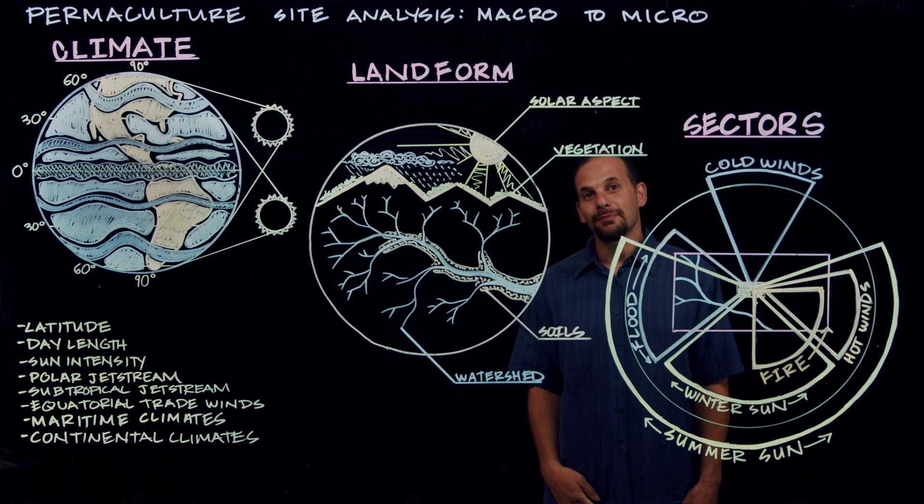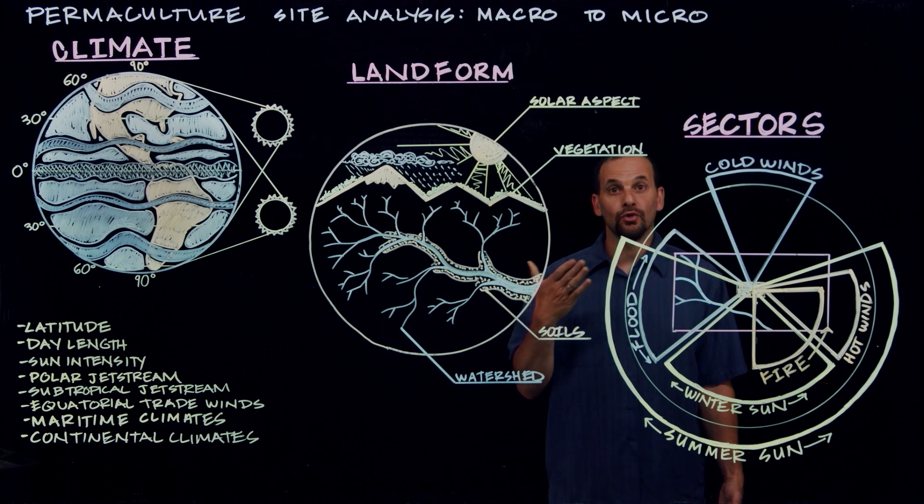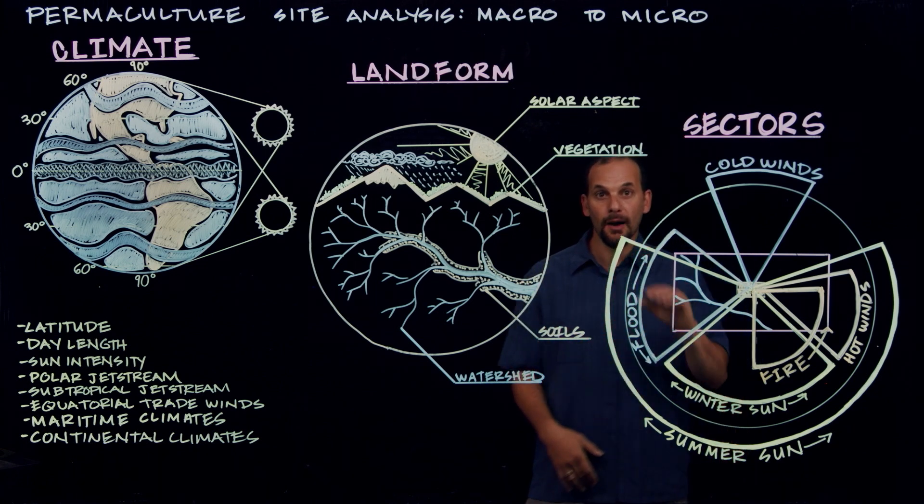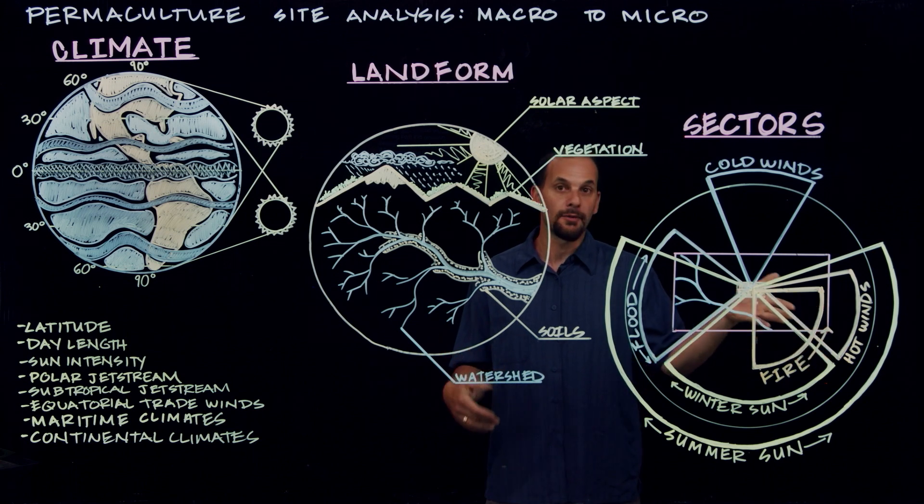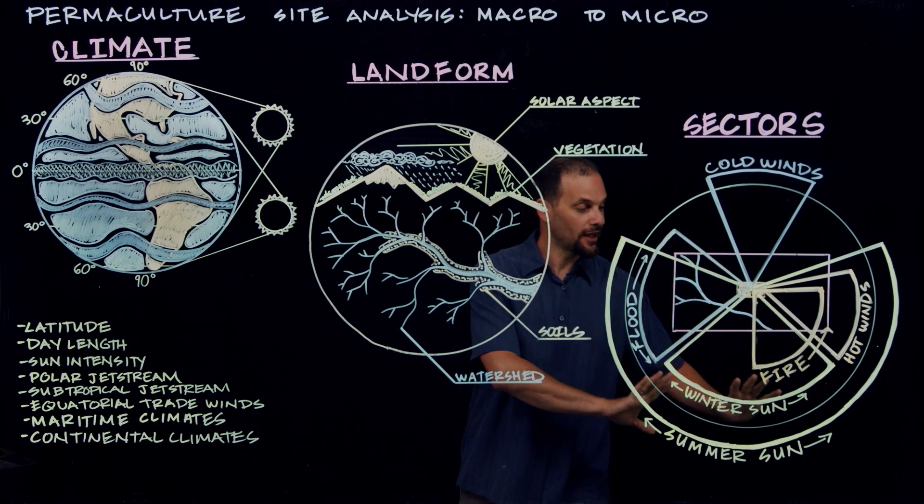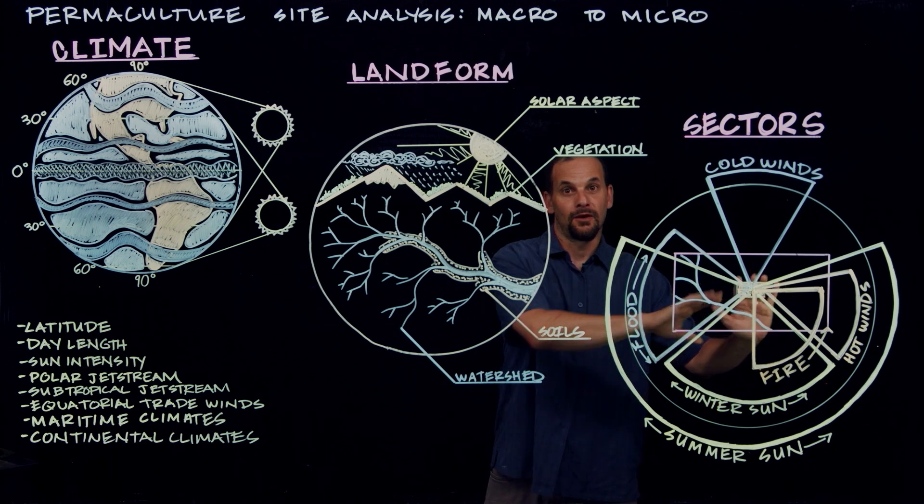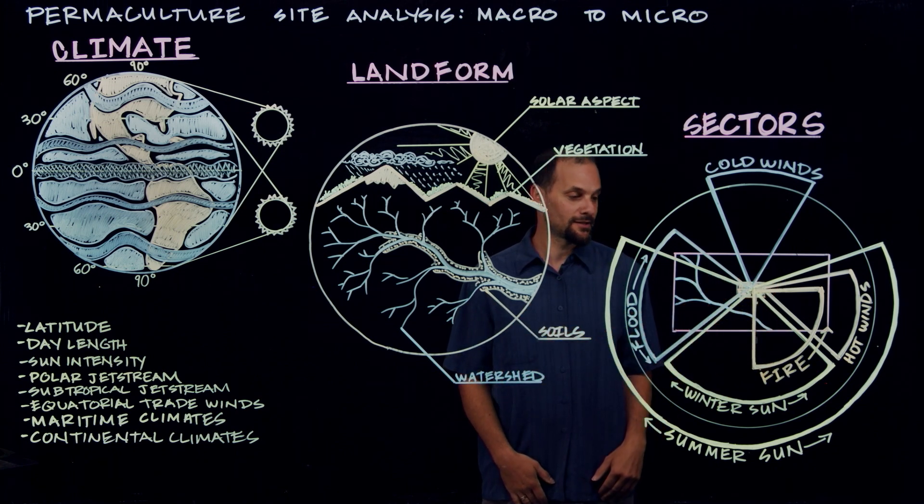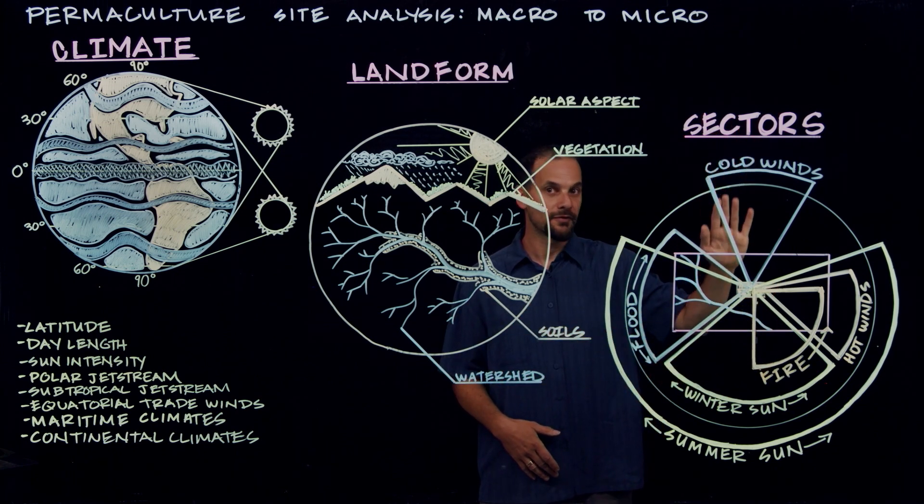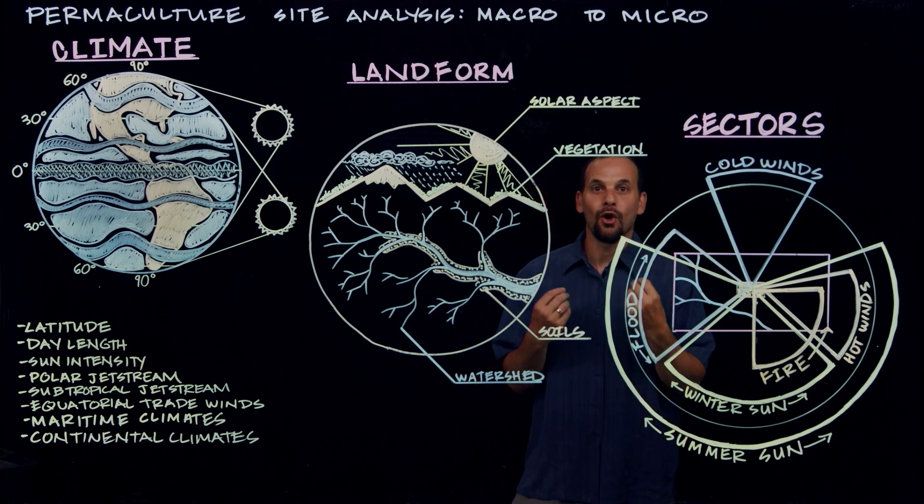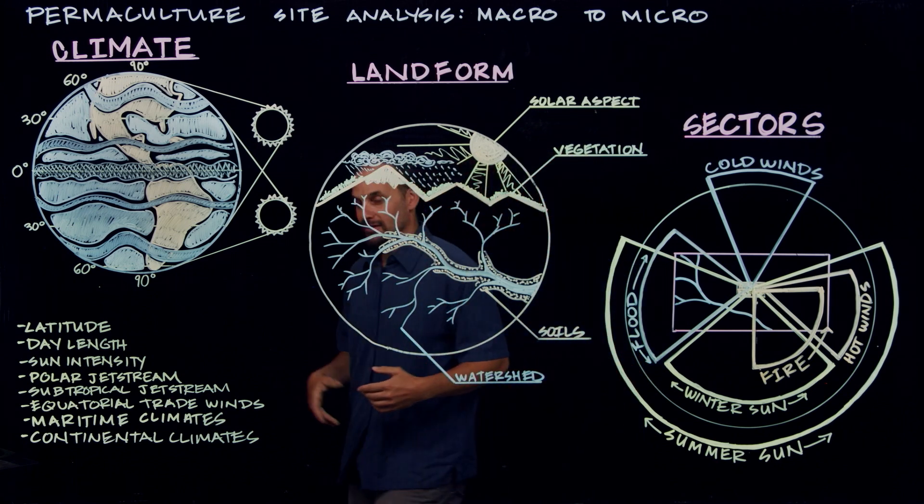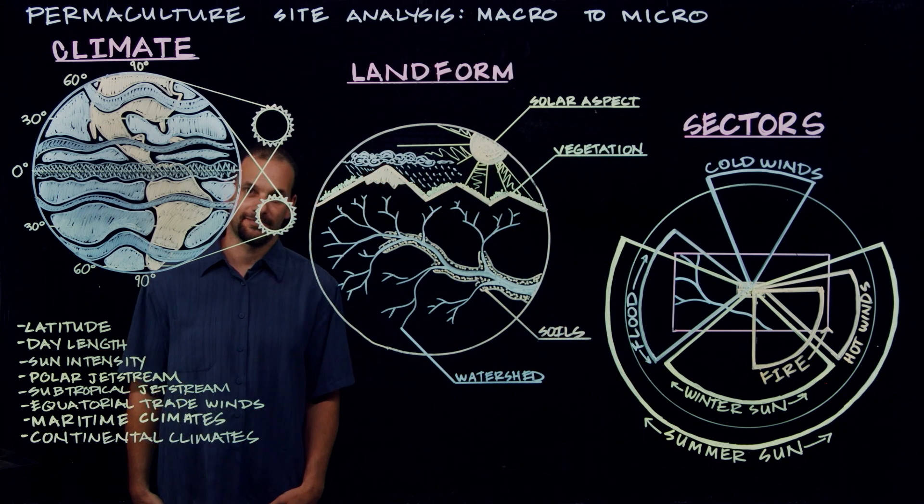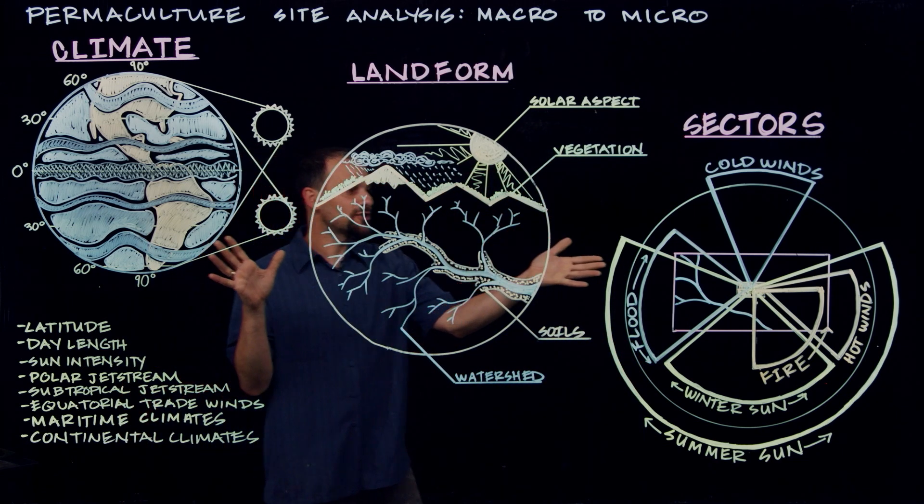Our design becomes a response to these forces. For example, we want to block or reroute floodwaters coming from this direction, deflect wildfires coming from this direction, but be open to sunlight in the wintertime, or cool summer breezes coming from this direction. We can only plan at this level of detail because we started our analysis so far out in space.